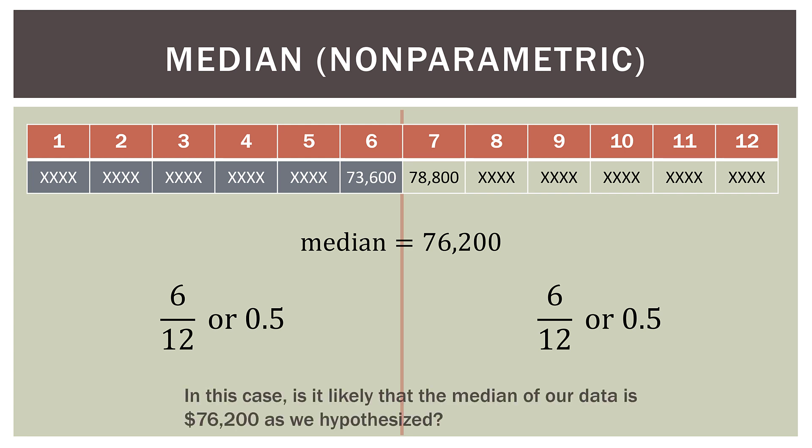Now, what we can ask ourselves is in this case, is it likely that the median of our data set is 76,200 as we would hypothesize? Well, in this case, of course it is. We're kind of moving backwards. We're starting with the quantitative way of doing median. And now we're gonna transition into the non-parametric. But what I want you to focus on here in this slide is not even the 76,200. I want you to focus on the middle part, six out of 12 on one side, and six out of 12 on the other side.